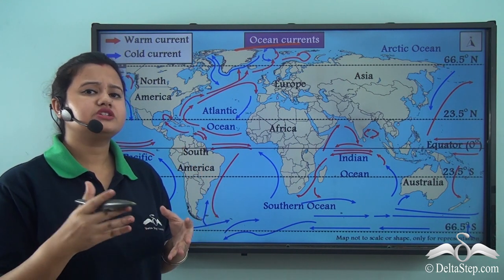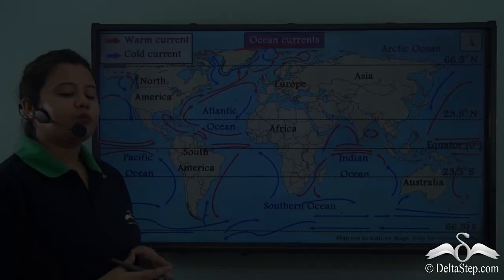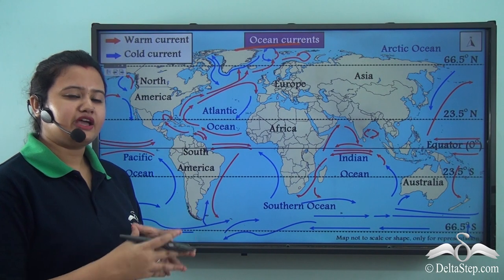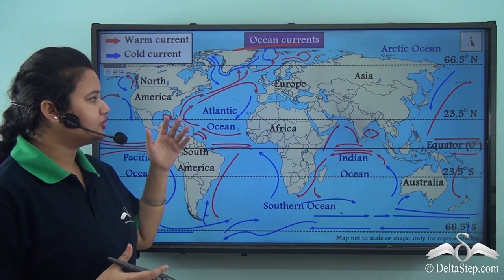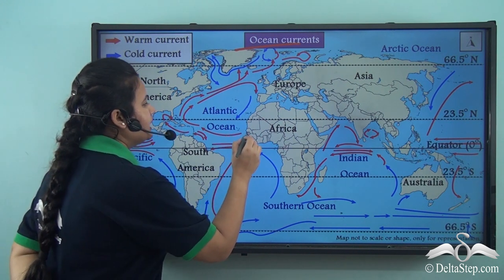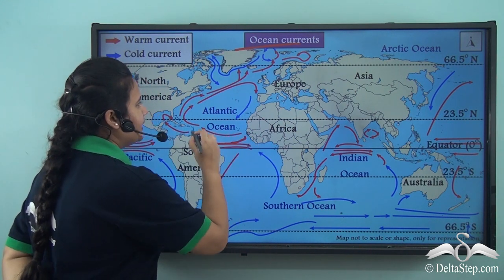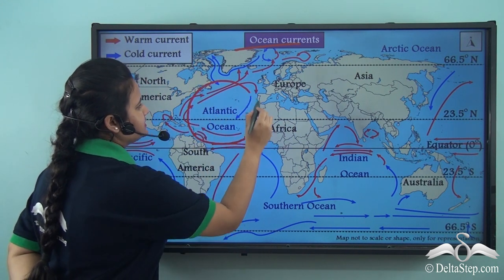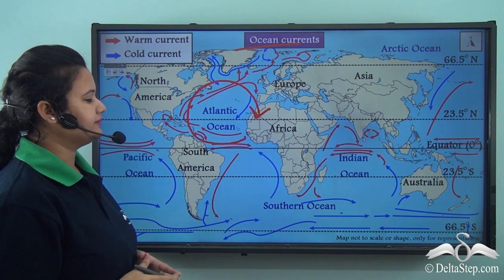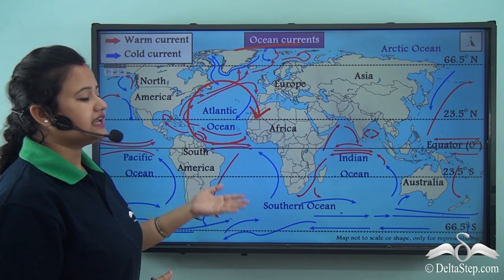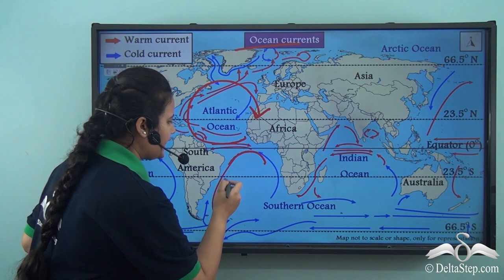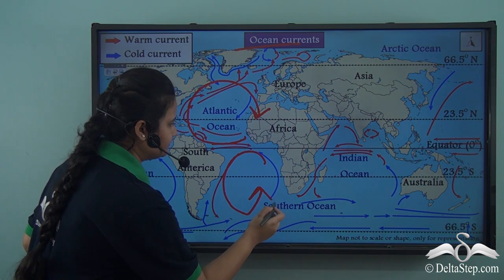What is this specific direction? Looking at this map carefully, in the northern hemisphere the ocean currents follow a clockwise pattern, whereas in the southern hemisphere they move in an anti-clockwise direction.